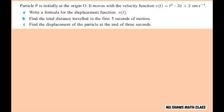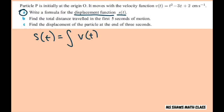The first thing we're going to do is find the displacement function S of t. That's just the anti-derivative of our velocity v(t) dt. So that's going to equal the anti-derivative of t squared minus 3t plus 2 dt.